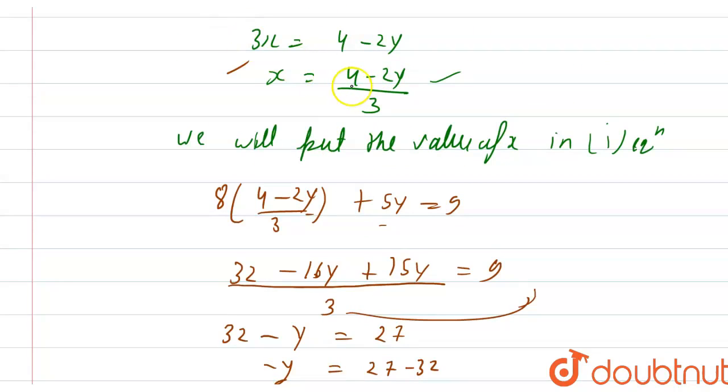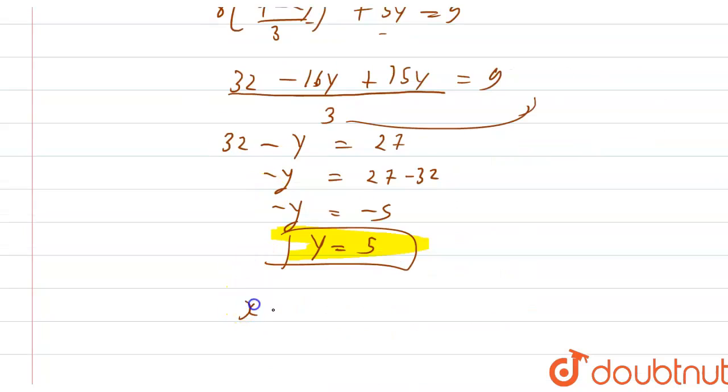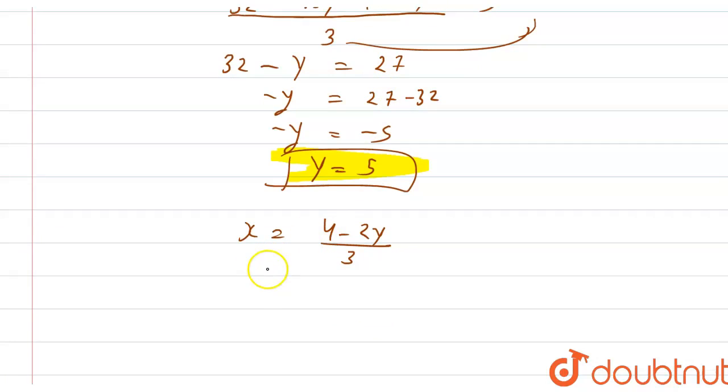If I put the value of y in this, x equals 4 minus 2y divided by 3. Now x will be equal to 4 minus 2 times 5 divided by 3.